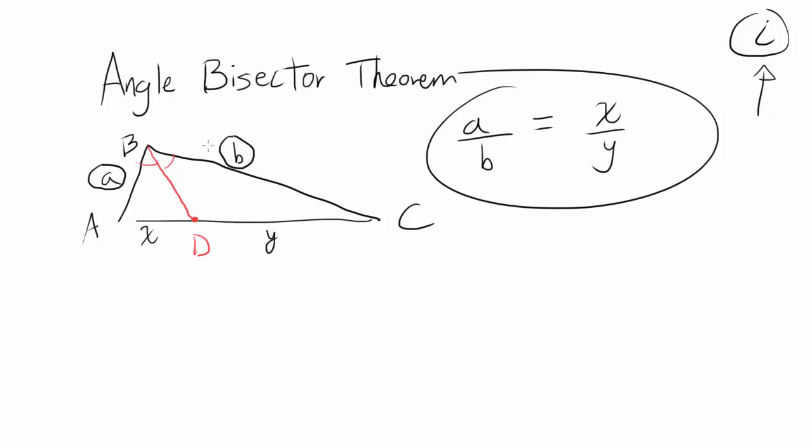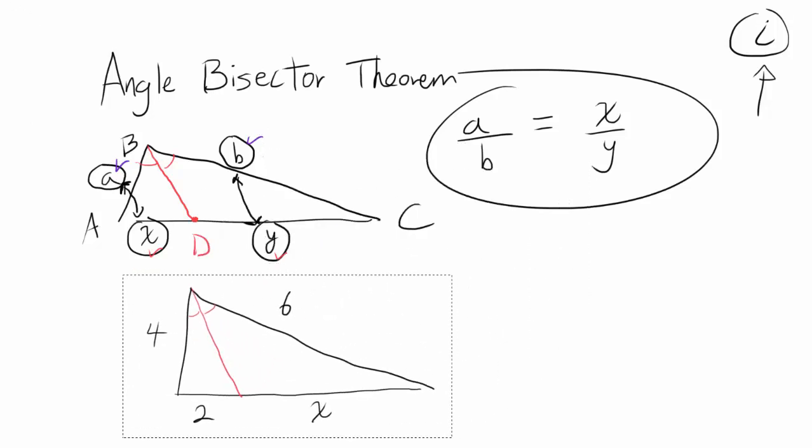So you have A over B, so you have this part over this part. A and B are the sides that are not divided by the angle bisector, and the angle bisector is dividing the side into two pieces, X and Y, and the ones that are adjacent, the ones that are right next to each other. So A and X are right next to each other, and B and Y are right next to each other. You can just make a ratio: A over B is equal to X over Y. That's what angle bisector theorem is.